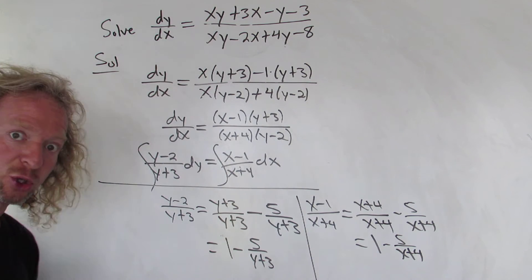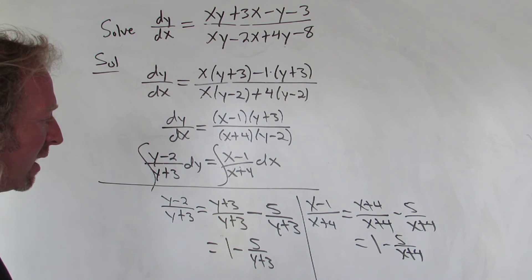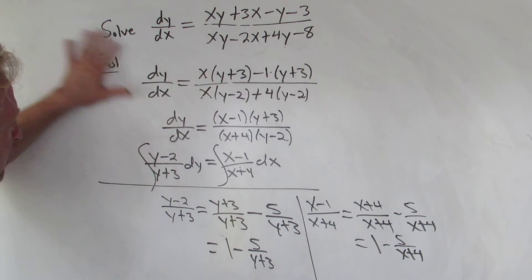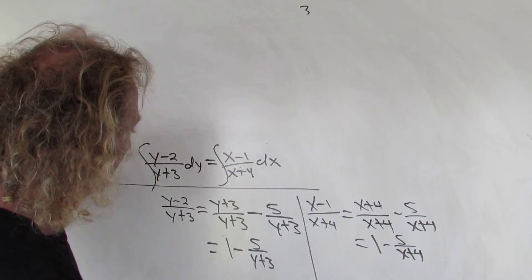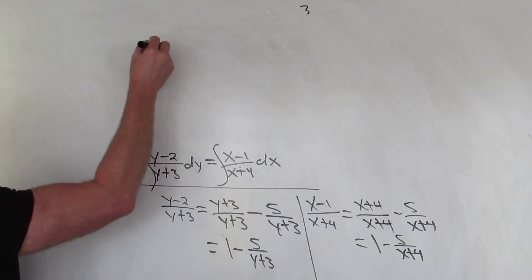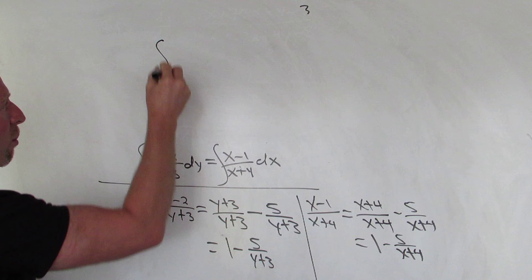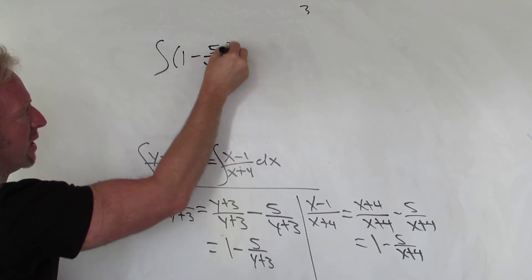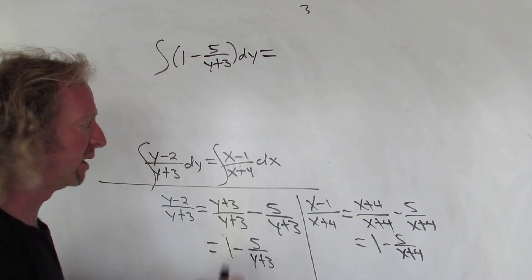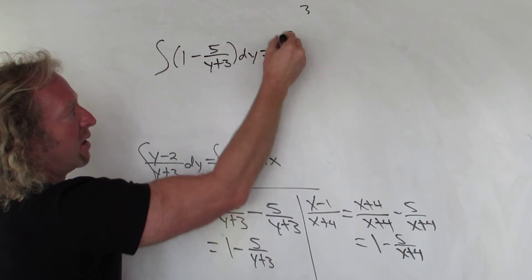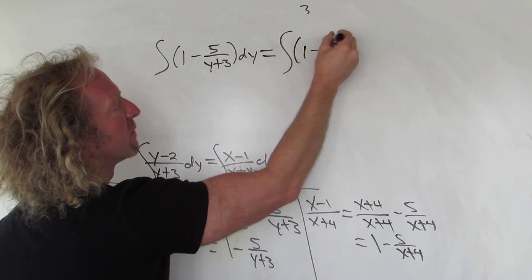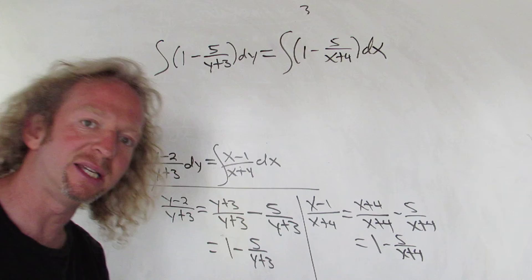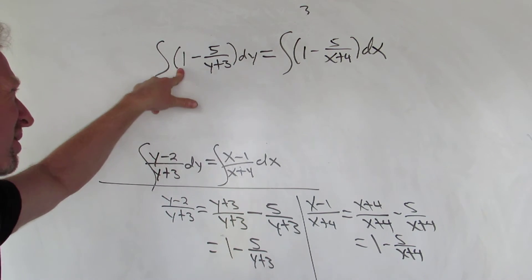These cancel and so you get this. This is a reoccurring idea in mathematics, so this technique is super useful in math. Okay, so that's what we're going to have. I'm going to go ahead and erase this and rewrite these integrals. So we have the integral of (1 - 5/(y+3)) dy equals the integral of (1 - 5/(x+4)) dx.